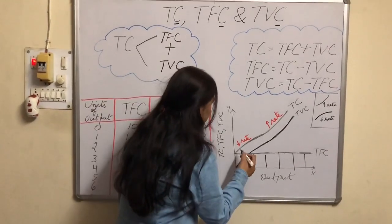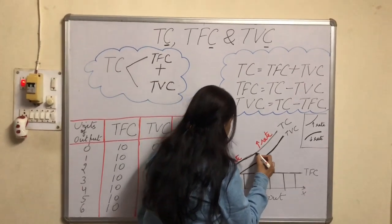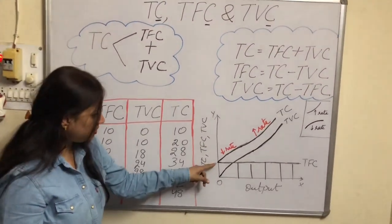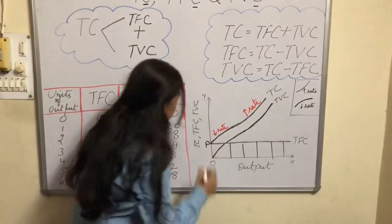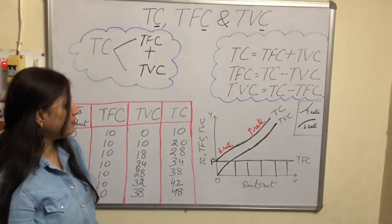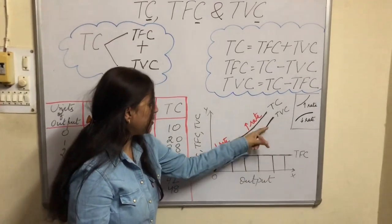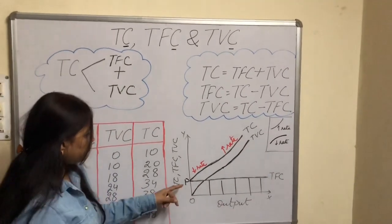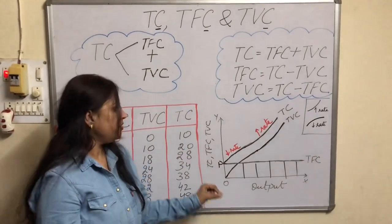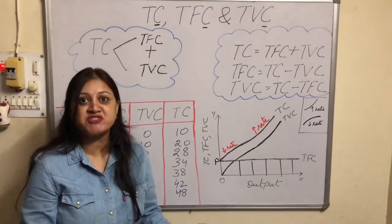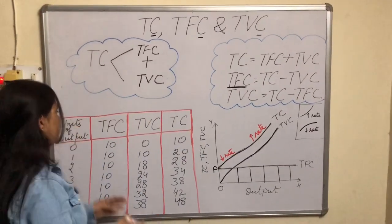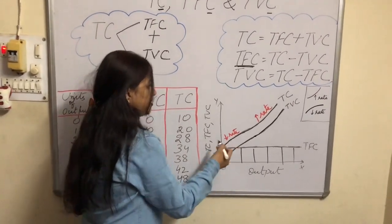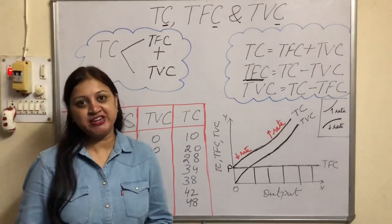You can see that parallel to the TVC curve is the TC curve. TC is parallel to TVC — and it starts from the TFC point, let's call it point P. It starts from P because TC is the summation of TFC and TVC. The difference between TC and TVC is TFC, and TFC is constant at all levels of output. Just because of that, TVC and TC are parallel to each other. So this was the relationship between TC, TFC, and TVC.